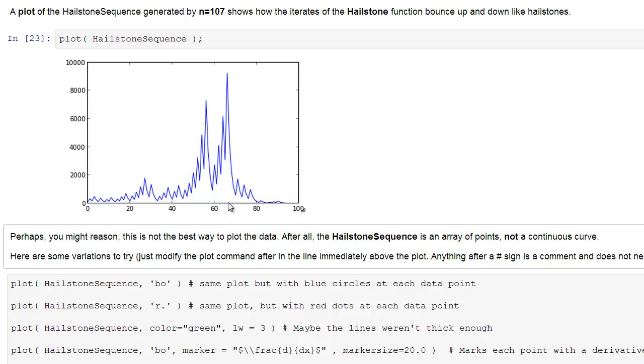the 65th iterate in the Hailstone sequence reached a maximum value up here, somewhere just below 10,000.